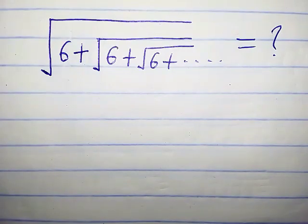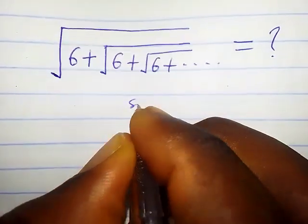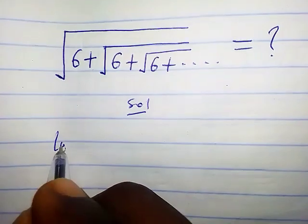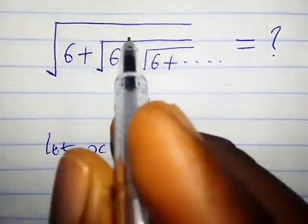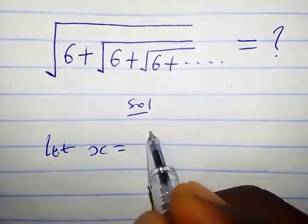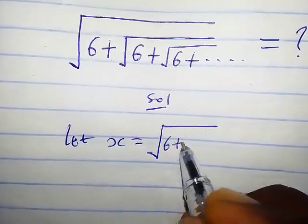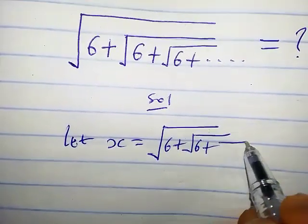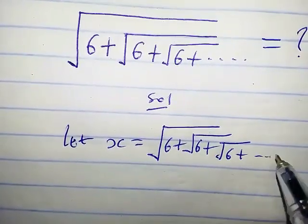Hello, how do we solve this kind of problem? Let x equal this expression: the square root of 6 plus the square root of 6 plus the square root of 6, and so on.